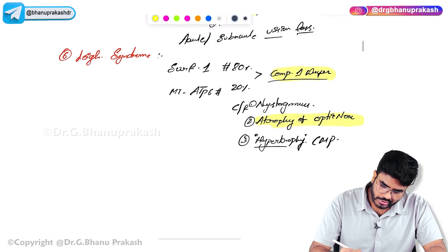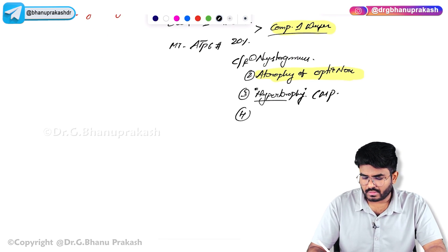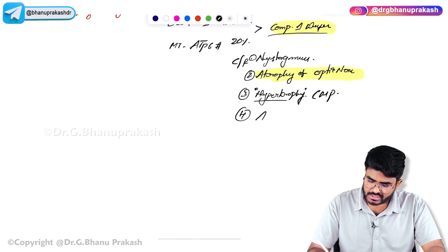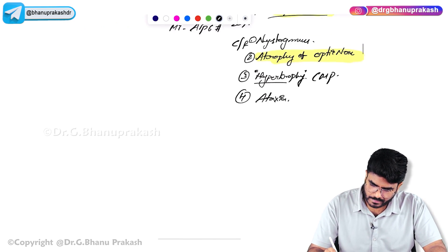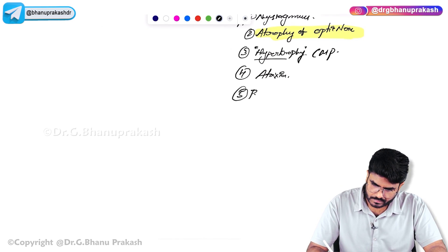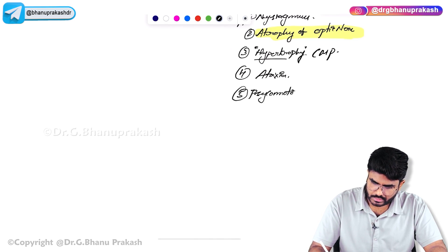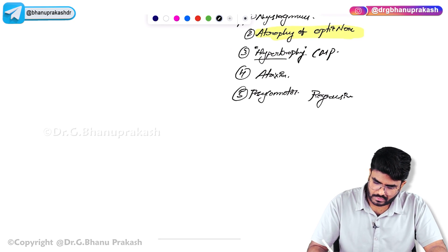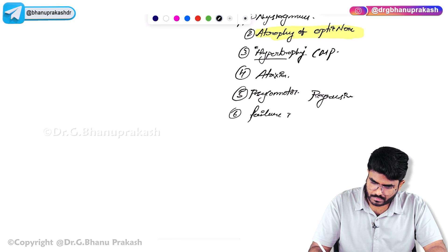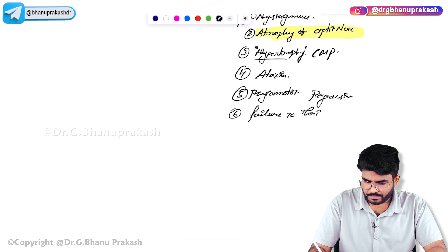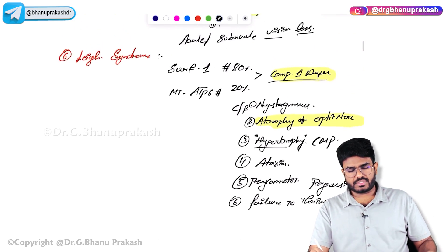The sixth disorder is Leigh syndrome. In Leigh syndrome, SURF1 gene mutation is seen in 80% of cases, and MT-ATP6 gene mutation in 20% of cases. Both result in Complex 1 dysfunction. Clinical features include nystagmus, optic nerve atrophy, ataxia, psychomotor regression, and failure to thrive.